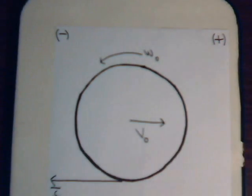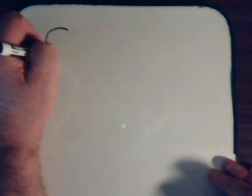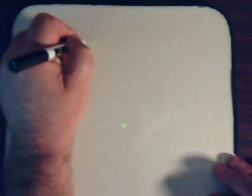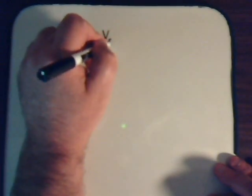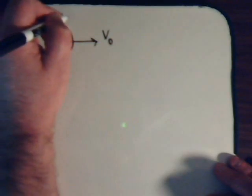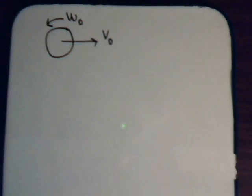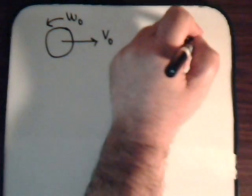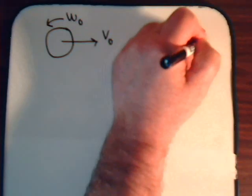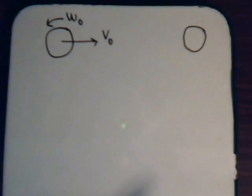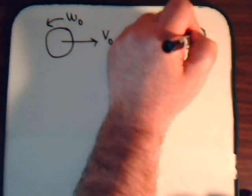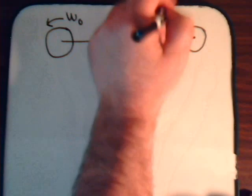We have the ball skidding forward with an initial velocity and a backward spin. At some point it stops and comes backward, and when it comes backward it's rolling — it's in pure roll.